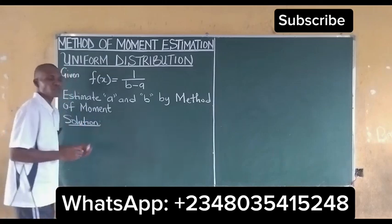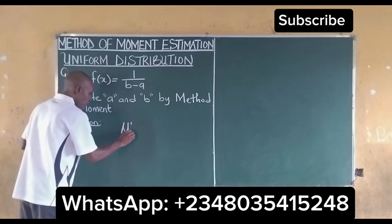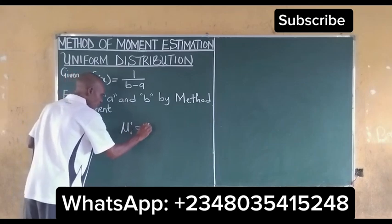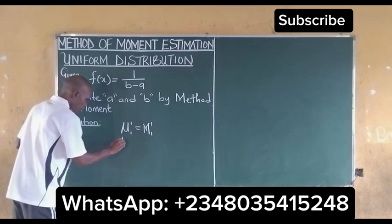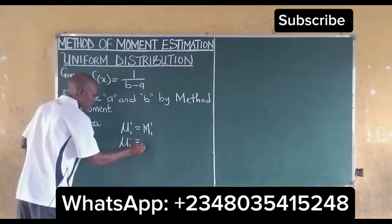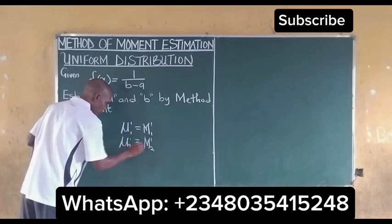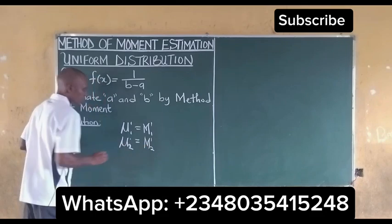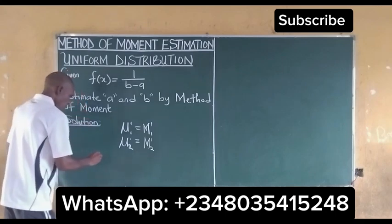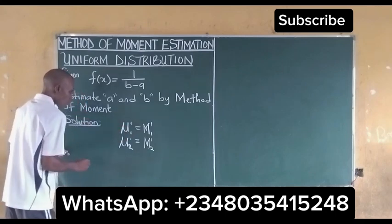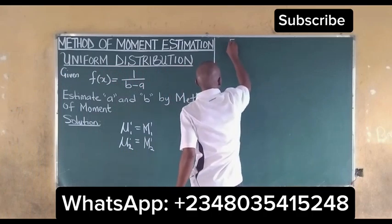Since we have two parameters here, the solution to the method of moments will be: for the first moment, we will have the population mean equal to the sample mean, while for the second moment, we will also have the population moment equal to the sample moment.